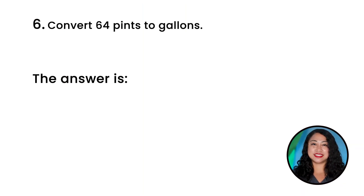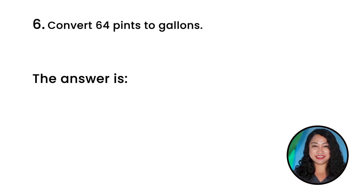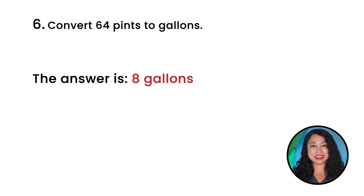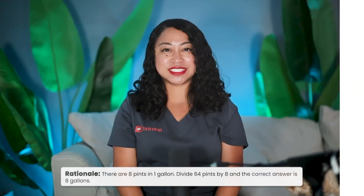Question 6: Convert 64 pints to gallons. The correct answer is 8 gallons. Rationale: there are 8 pints in one gallon. Divide 64 pints by 8 to get 8 gallons.